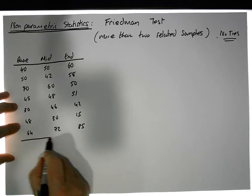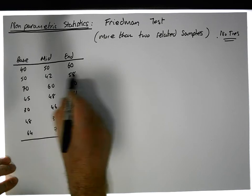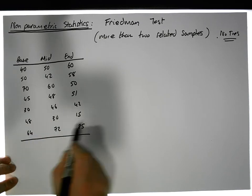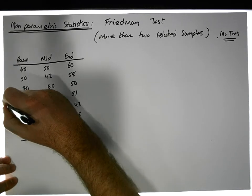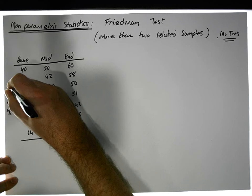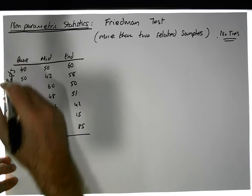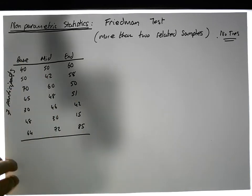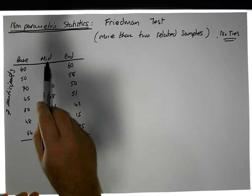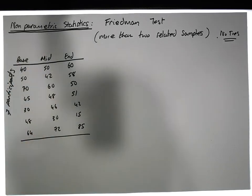So in this particular situation we had 1, 2, 3, 4, 5, 6, 7—we had 7 participants, and they were measured 3 times at baseline, midpoint, and endpoint on a particular scale.